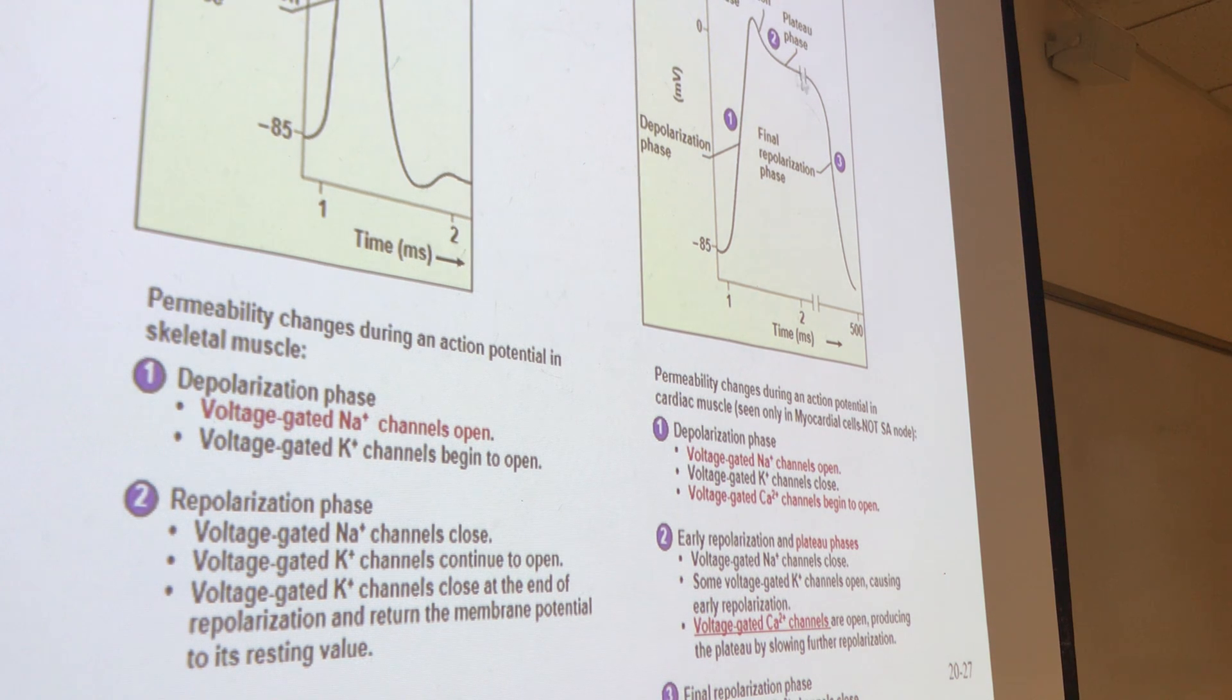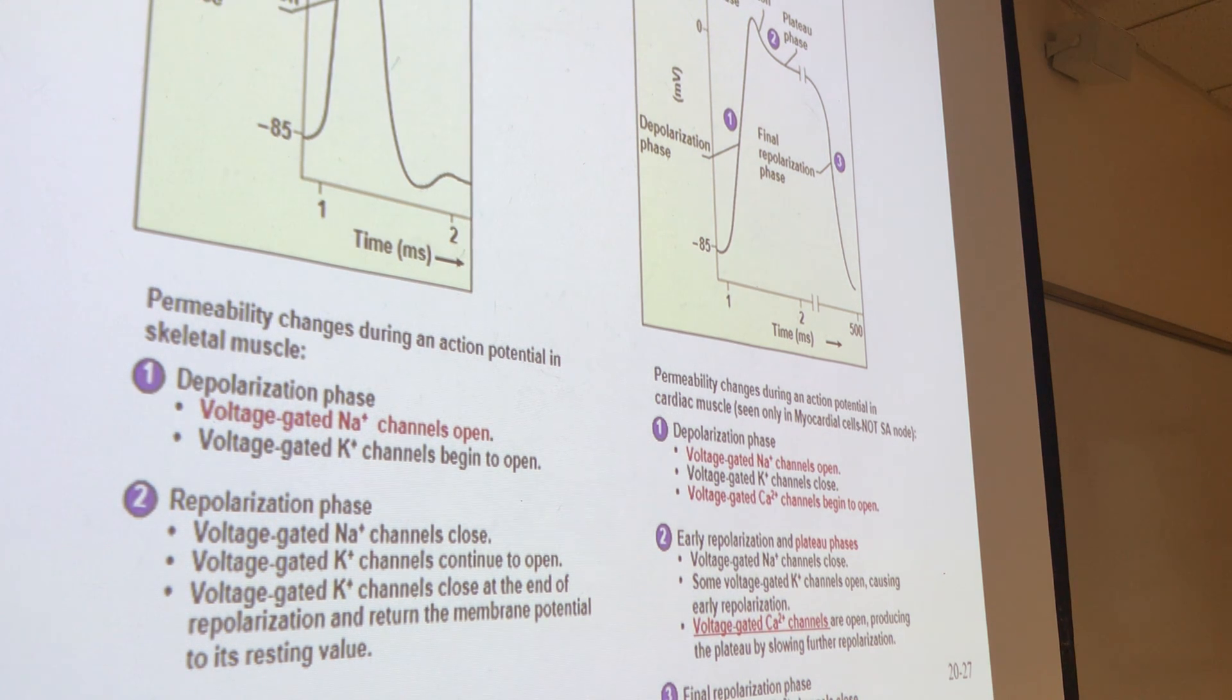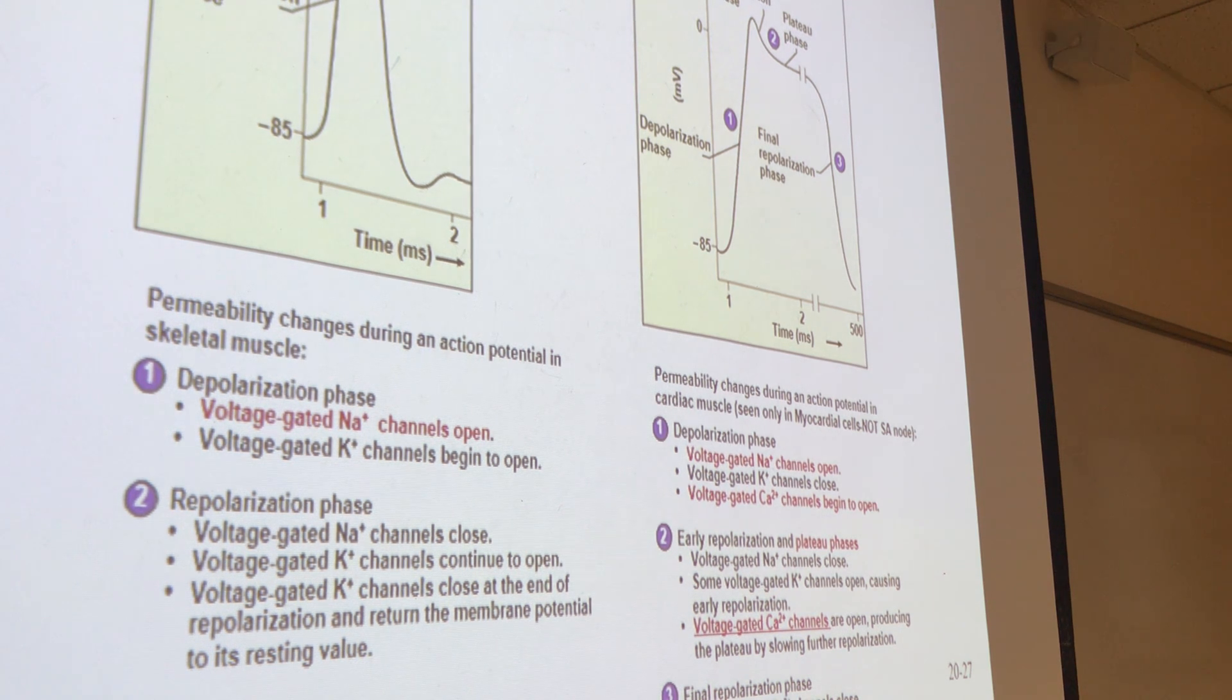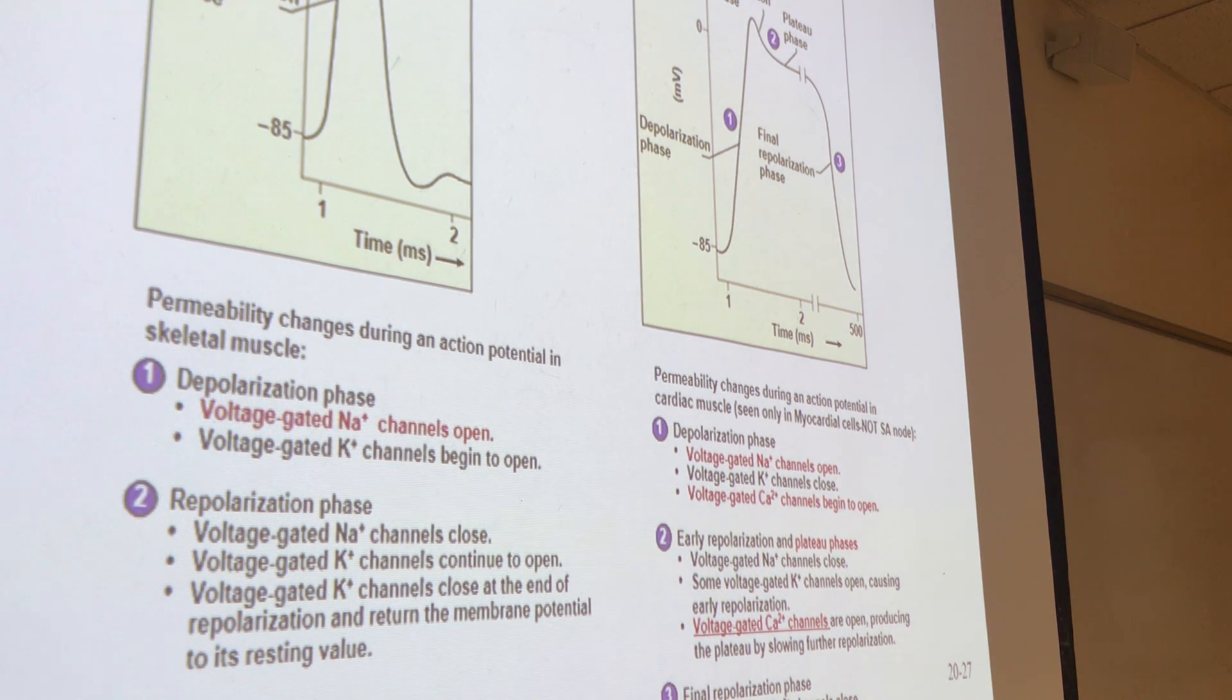That's what the plateau phase allows us to do. Now we have this prolonged plateau phase, lots of calcium coming in. You have more calcium in the cardiac muscles, so you can contract and sustain that contraction. In skeletal muscle, when we contract, the stronger the contraction, the more tetanic contraction we need, the more activations, more action potentials in a very fast timeframe.